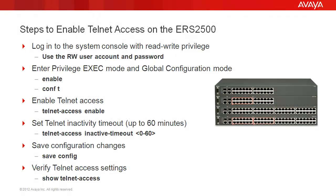We'll go through these steps to enable Telnet access on the ERS2500. First, we'll log into the system with read-write privilege using the rw user account and password. Then, we enter the privilege exec mode with enable and the global configuration mode with conf t. Then, to enable Telnet access, we use the command telnet access enable.